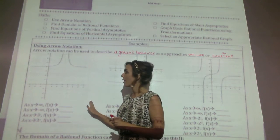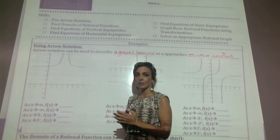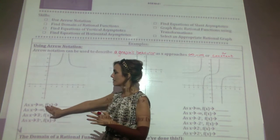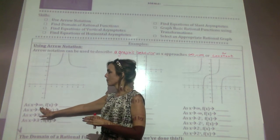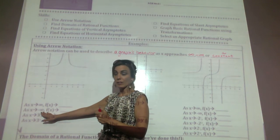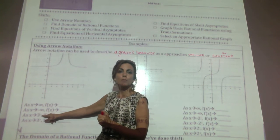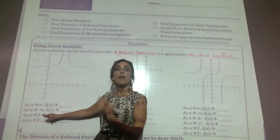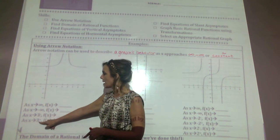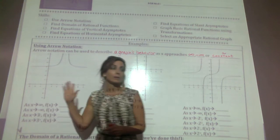We'll begin with this graph and discuss how we can use arrow notation to describe what the graph is doing in these situations: where x approaches infinity, where x approaches negative infinity, where x approaches 3 from the left — the subscript negative means from the negative side of the x-axis or the left side — and as x approaches 3 from the right.